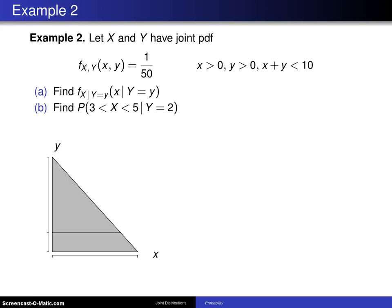Here's an example that involves a joint probability distribution that we've seen before. Let X and Y have joint probability density function f of x, y is 1/50 for x greater than 0, y greater than 0, x plus y less than 10.